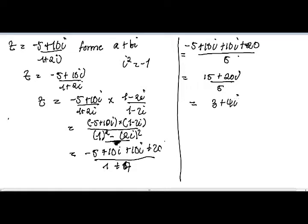That's for part a of question 7 — the answer in the form a + bi is 3 + 4i. Now we'll do part b. Part b asks for the modulus and the argument. If you don't have the question paper, please visit our website.